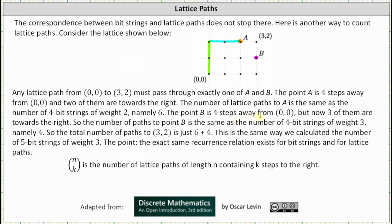The point B is four steps away from (0,0), but now three of them are towards the right. One example would be starting at (0,0), moving right three units and then up one unit. Because the path has length four and there are three steps to the right, the number of paths to point B is the same as the number of four bit strings of weight three, which is 4 choose 3, which equals 4.